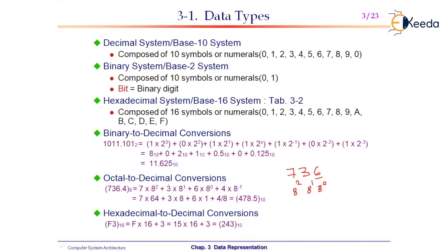To convert an octal number to decimal, multiply each digit by its respective octal weight. Then add all the results. For digits after the octal point, the first weight is 8^(−1), the second is 8^(−2), and so on — these must also be multiplied and added to obtain the final result.